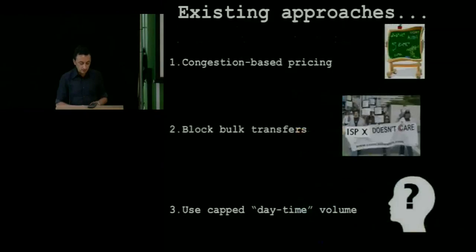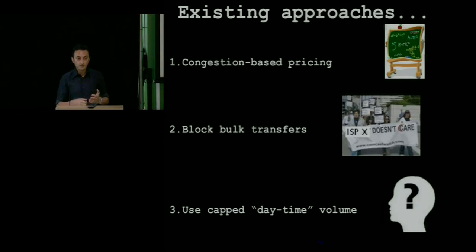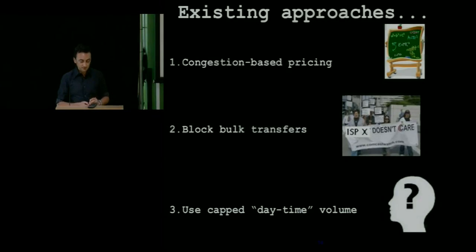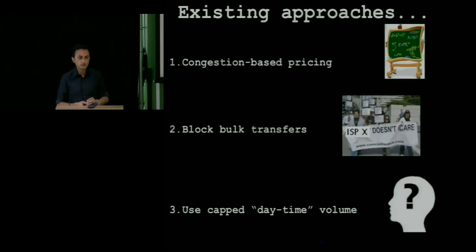The solutions available include playing with pricing schemes — very sophisticated congestion-based pricing that users don't understand and ISPs find hard to track. Another option is to block these transfers, which is a complete fiasco for users and ISPs. A third option is daytime volume caps, but these are also very hard for users because they need to keep track of how much volume they've consumed, and in the long run it doesn't work.